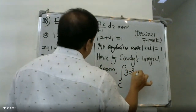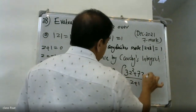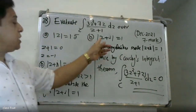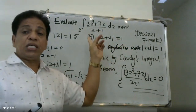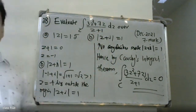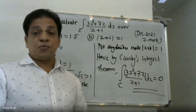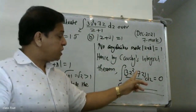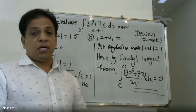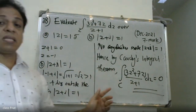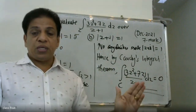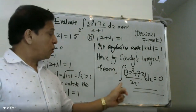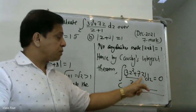For the case where |z+i| equals one: z equals minus i lies outside the region, so there is no singularity inside. Mode |z+i| is equal to one. Therefore by Cauchy's integral theorem we can easily write the integral of C of three z squared plus seven over z plus i, which is equal to zero. By Cauchy's integral theorem, since no singularity lies inside the contour, the integral equals zero.